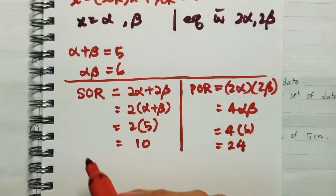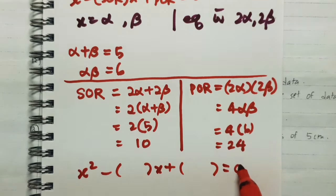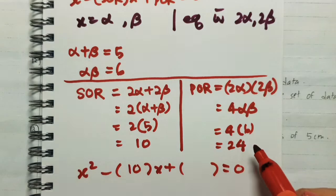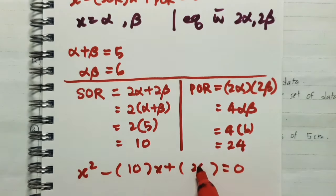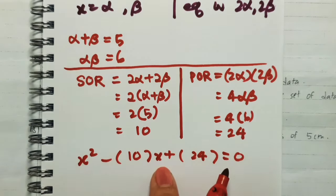With this, we can form the equation in this format: x² - (sum of roots)x + (product of roots) = 0. Our sum of roots is 10, and product of roots is 24. So I just remember the framework: x² - (sum of roots)x + (product of roots).